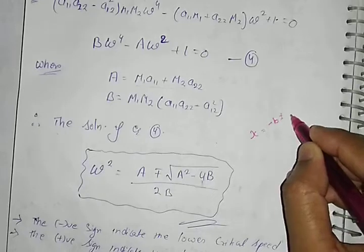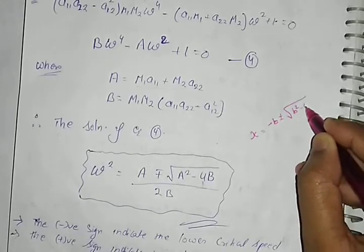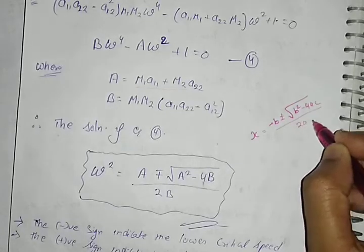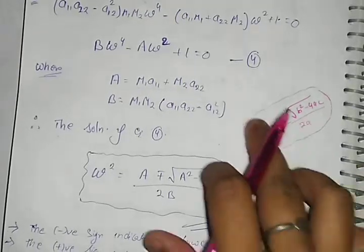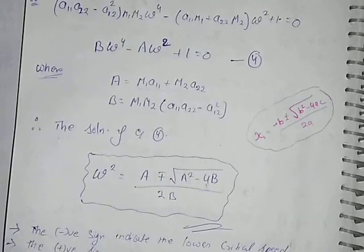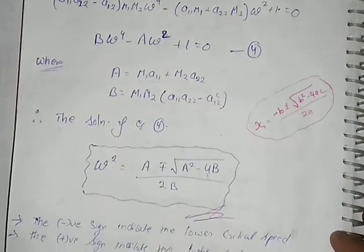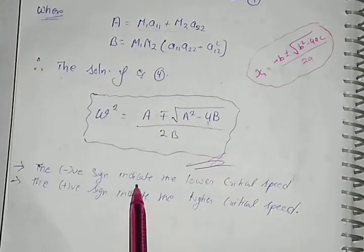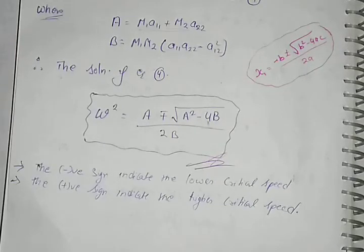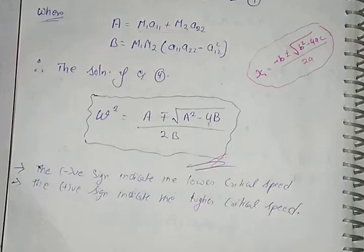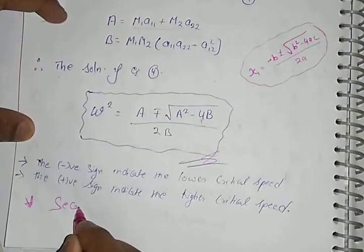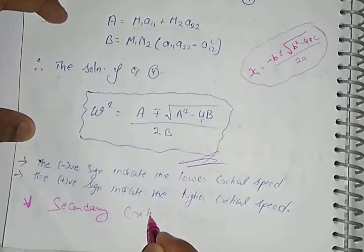Also we know that the quadratic equation is -B plus minus root of B^2 - 4AC upon 2A. This is the quadratic equation to find the value of X1 and X2 from the N equation. This equation already looks like a quadratic equation of omega^2. When we consider negative sign, it means the lower critical speed, and when we consider the positive sign, it means it has high critical speed.